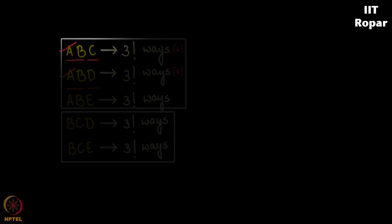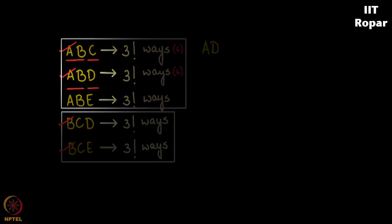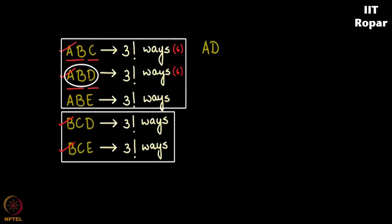Now A, B is done, B, C is done. Now let me move on to A, D. A, D along with B, now that's exhausted here as you can see, so this possibility should not be considered. A, D along with C, is that over? No it's not over, so three factorial permutations.